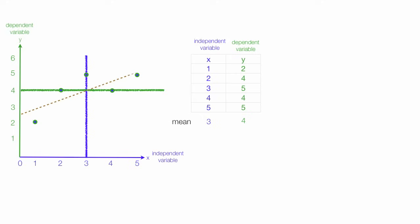It turns out that all regression lines have to go through that point there. That's where the mean of the independent variable and the mean of the dependent variable cross.